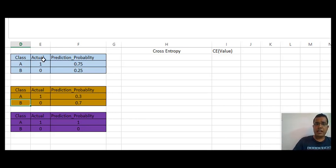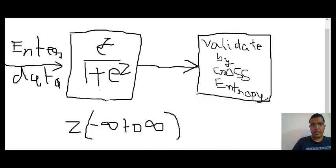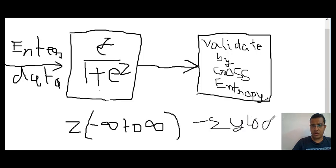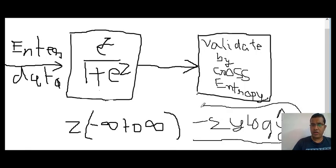Now cross entropy comes into the picture. Let me write down the formula for cross entropy. The formula for cross entropy would be: minus summation of y times log y-hat.